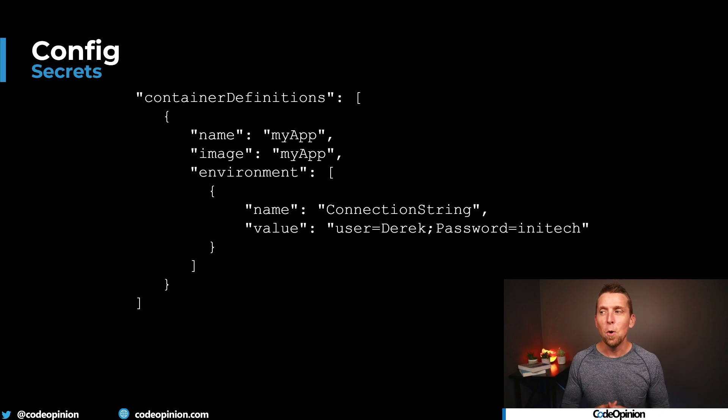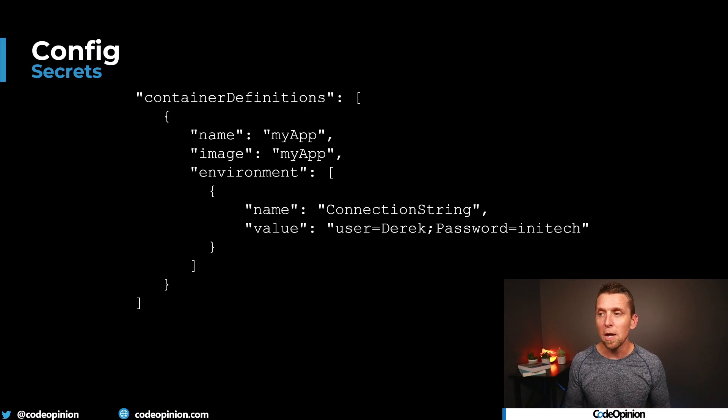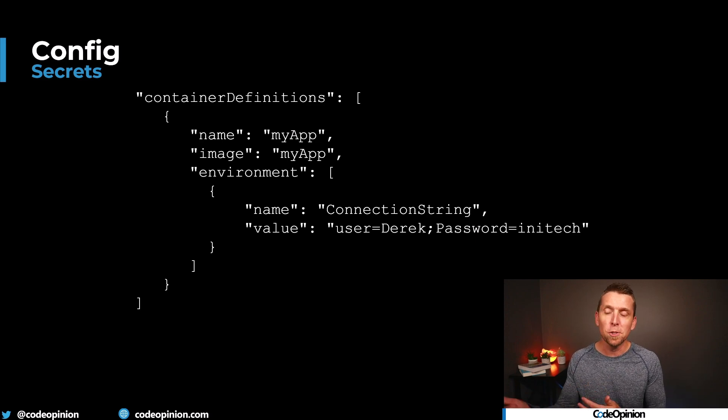This raises the question of what type of information you want to pass with environment variables. With a local file deployed with your application, you need to be careful of sensitive information like connection strings with passwords. Using environment variables for this isn't really feasible because you'd have to generate that Docker file or ECS task and you're exposing this data in plain text. Whether it's a configuration file or environment variables defined in config files like Docker Compose or an ECS task, it's the same thing — be very careful about sensitive information.